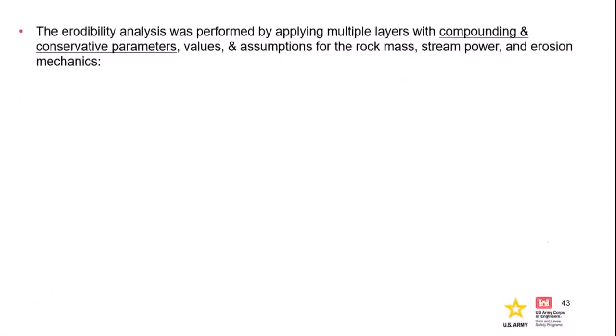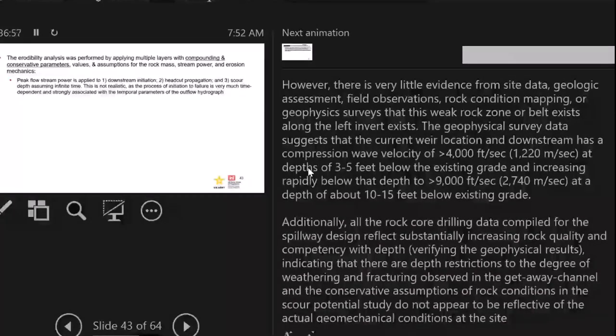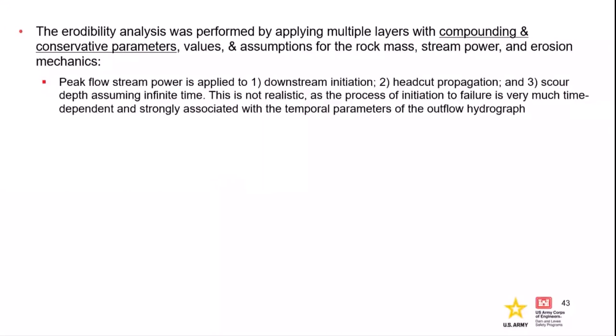After reviewing the document, we found compounding conservative assumptions, parameters, and values in the erodibility report. They used stream powers from peak PMF flows throughout all phases of their erodibility analysis — initiation, head-cut propagation, and scour depth under the key wall — each time applying worst-case peak PMF stream power. At Thule River, the hydrograph is really spiky lasting 8-10 days. So it doesn't seem realistic to use peak stream powers at every phase, because if you're initiating and then progressing, by the time you get to the end sill, you're on the falling limb of that hydrograph and stream powers are going down.